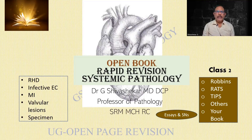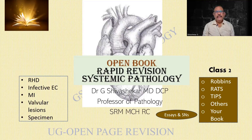There will be a small tabular column I have given mentioning the differences, and I would like you to kindly mark it. Vegetations are bulky and friable, leading to septic emboli. What are the Roth spots and Osler's nodes? They are very important for us to answer.